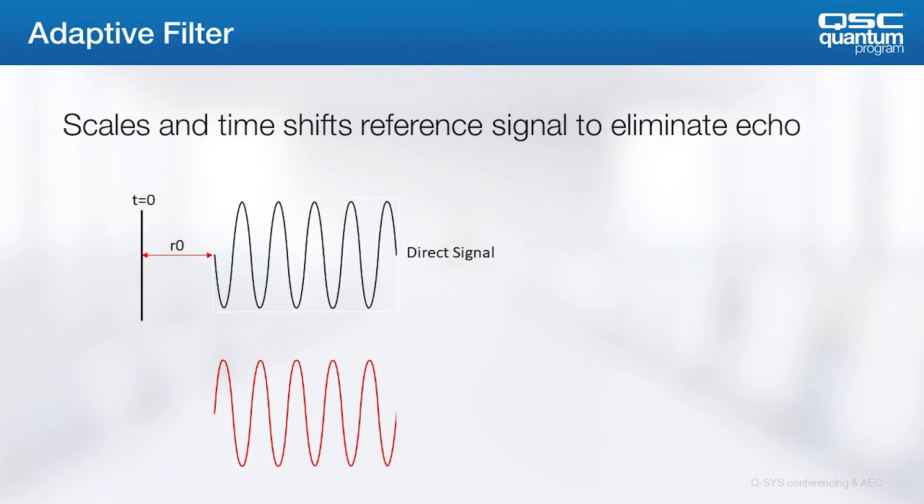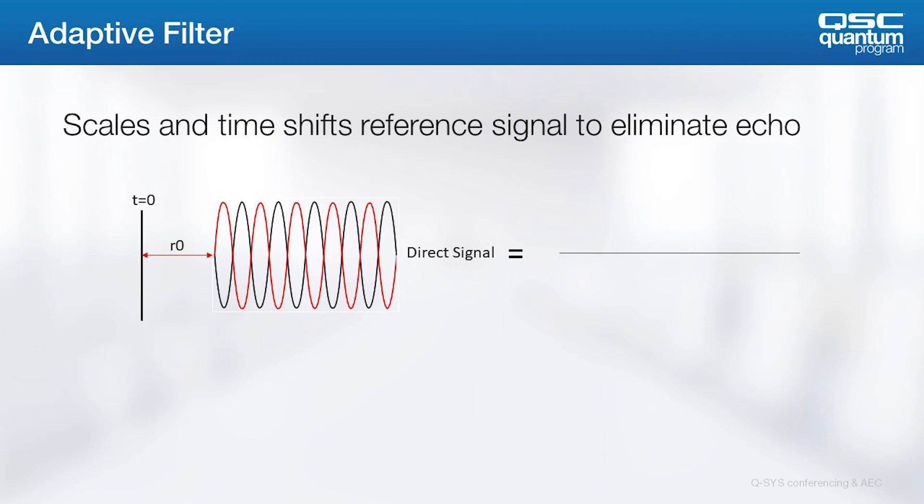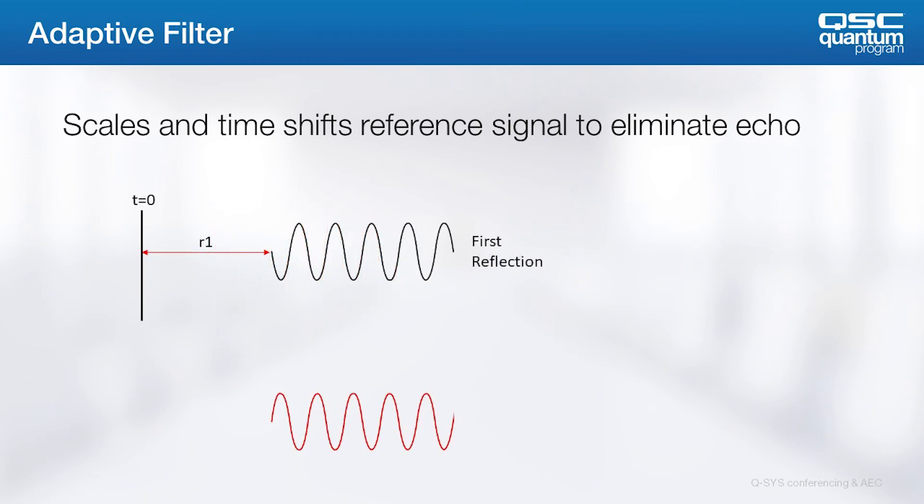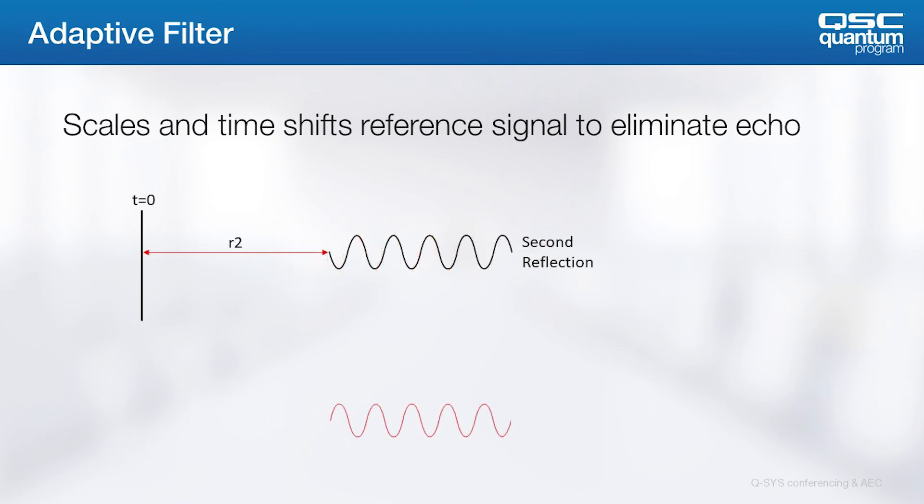The algorithm works to calculate what's known as the impulse response of the room to decide the relative time-shift and amplitude of each reflection. The algorithm then works to scale and shift the reference signal to be exactly out of phase with the incoming mic signal. As we know, adding two audio signals that are completely out of phase results in a cancellation of the signals in question. The same operation is carried out for the first reflection, and finally for the second.